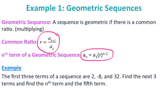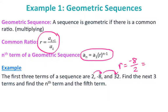For the first example, the first three terms of a sequence are 2, negative 8, and 32. Find the next three terms, the nth term, and the fifth term. My first term is 2 and my second term is negative 8. To find the common ratio, I take my second term divided by my first term, which gives negative 4.